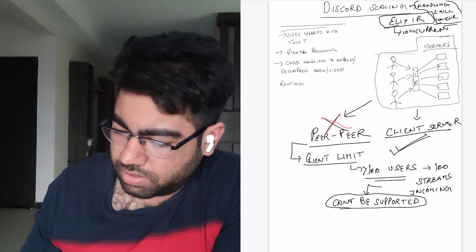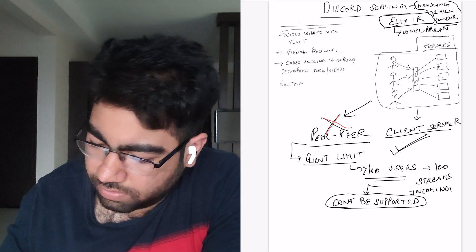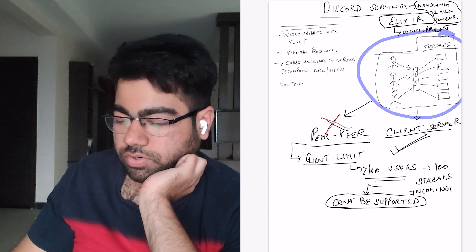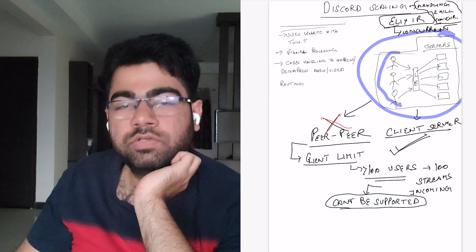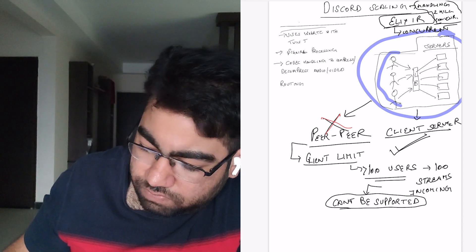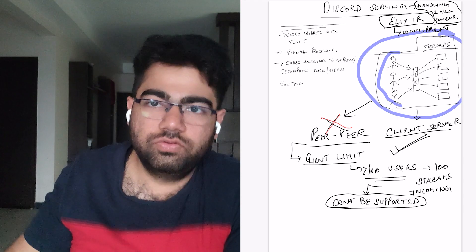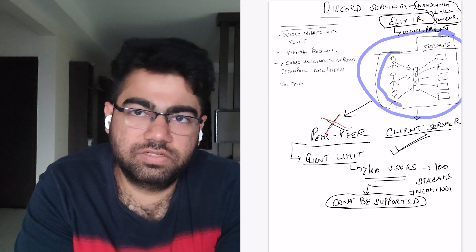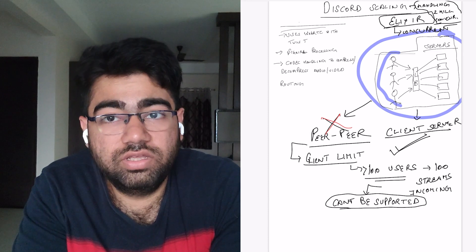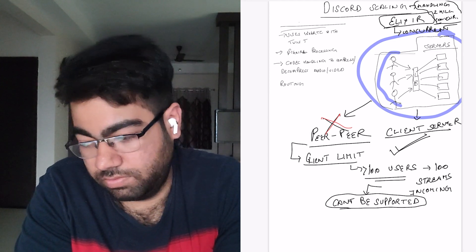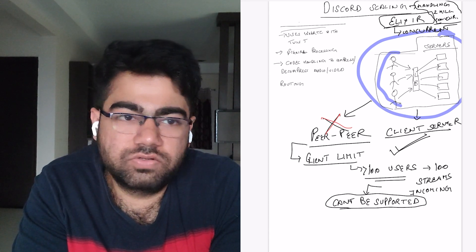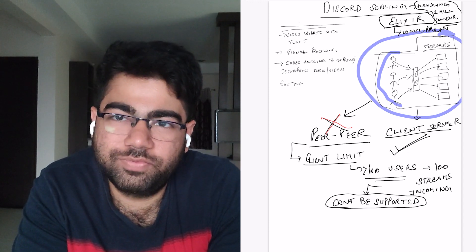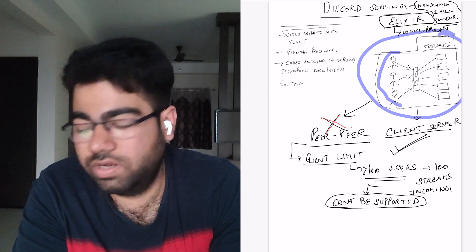Let's look at a basic simple architecture. There are a number of users connecting to the Discord service through a load balancer. How do these people communicate with each other? In this video we are just going to talk about voice communications. A Discord group call can support a large number of people — potentially a thousand people in a single call. How does that happen and how are they able to handle that?